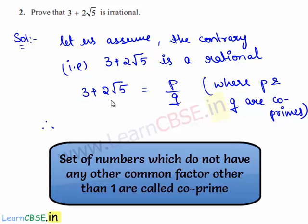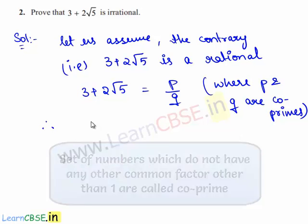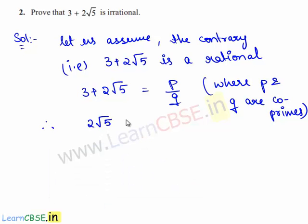Therefore, this can be written as 2 root 5 is equal to p by q minus 3. On transposing 2 to the right hand side, we have root 5 is equal to 1 by 2 times p upon q minus 3.